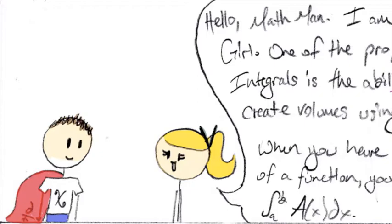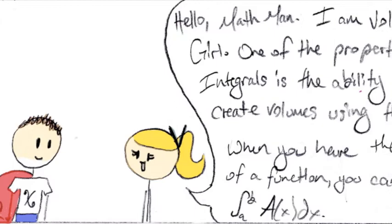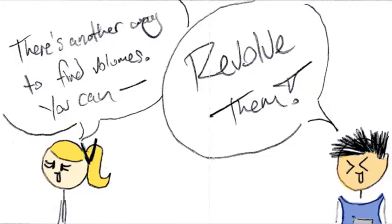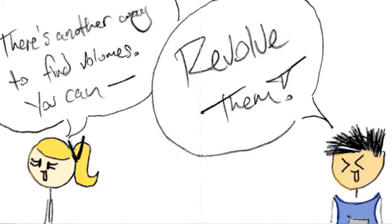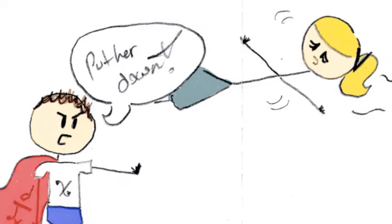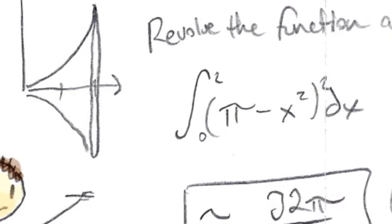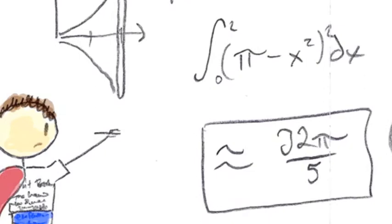There's another way to find volumes. You can... Revolve them! Whoa! I can control any volume I want. Put her down! First, solve this function. 32 pi over 5. Grr! You defeated me! Thanks, math man. You need to remember how to solve those functions. There are lots of those functions on the AP test. If you get good at them, you can get free points.